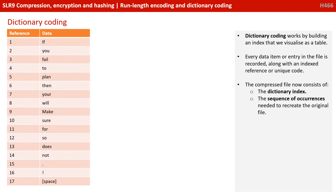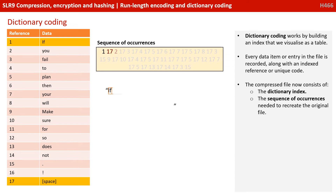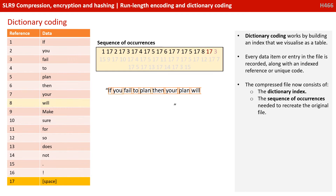Dictionary coding works by building an index that we visualize as a table. Every data item or entry in the file is recorded, along with an indexed reference or unique code. The compressed file therefore now consists of two things: the dictionary index and the sequence of occurrences needed to recreate the original file. You can see from the animation on the screen how we can follow the sequence of occurrences to make up the original phrase.